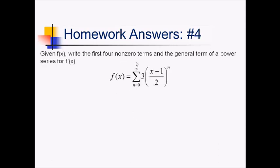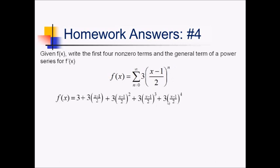For this problem, we want the first four non-zero terms and general term of f prime based on this original function series. We'll start by writing out the series for f of x. Since we want four non-zero terms for the derivative, I'm going to write out five non-zero terms for the original. My first term is 3 times all this stuff to the 0, which is just 3. The next term is 3 times all this stuff to the first power, plus 3 times all this stuff squared, 3 times all this stuff cubed, and one more term: 3 times all this stuff to the fourth. Plus my general term. Now for f prime, this 3 is going away. Next, I've got the derivative of 3 times this parentheses — this is really like 3 over 2 times x minus 3 over 2 — so taking that derivative, I end up with 3 over 2, the coefficient. The 3 halves constant gets differentiated away.